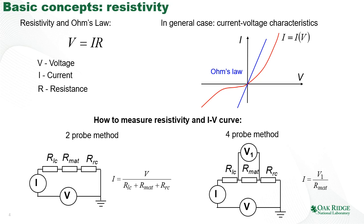How do we measure resistivity and IV curves? In a classical two-terminal measurement, our circuit element is connected to a voltage source and a current measurement system. The current flows through the whole device including all contacts, so we measure the total response. For metals this can be acceptable, but for semiconductors the contact resistance can be very significant—in fact, much larger than the resistance of the material itself.